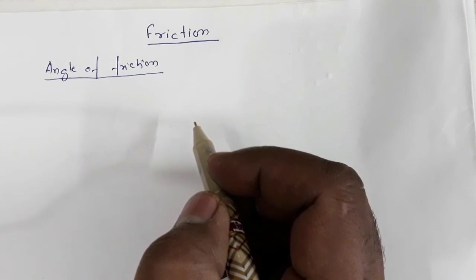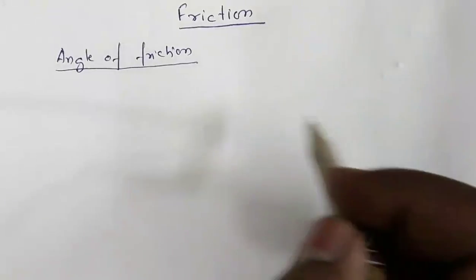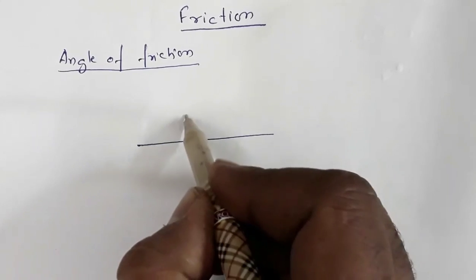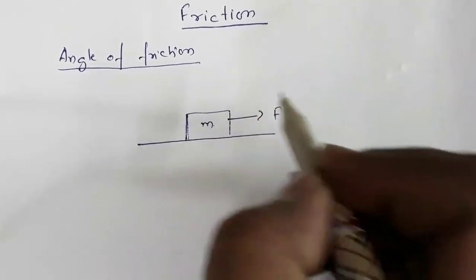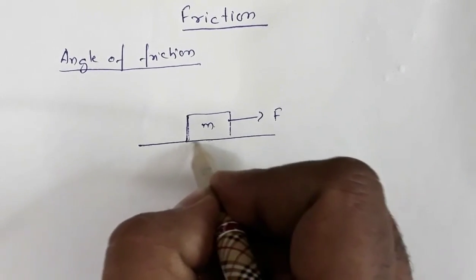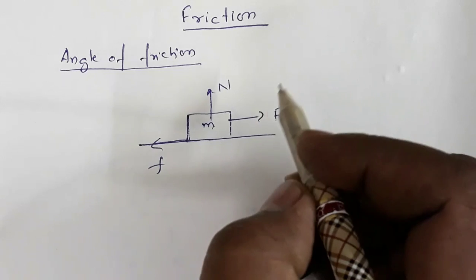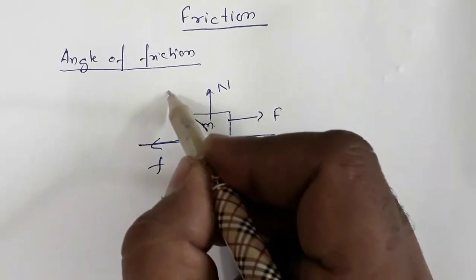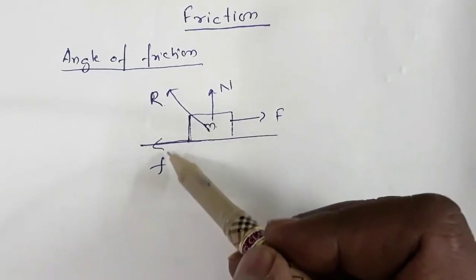First, let us see the term angle of friction. Suppose this is a horizontal surface and this is a block of mass m. Now this is the applied force f. The friction force will be acting in the opposite direction. This is the normal direction, and the resultant of these two forces — normal reaction and friction force — will act in this direction. This is the resultant R.